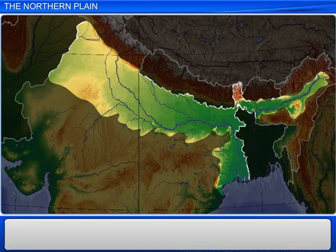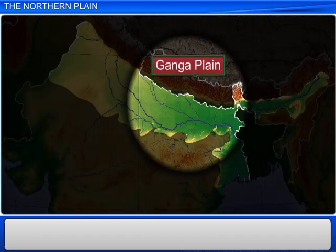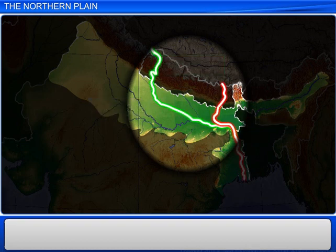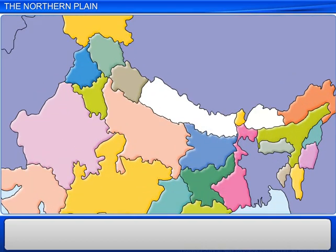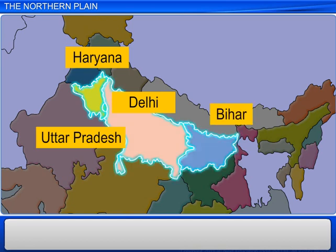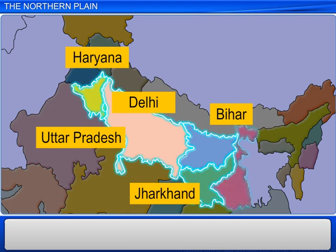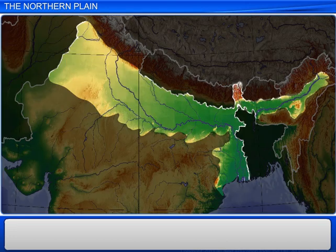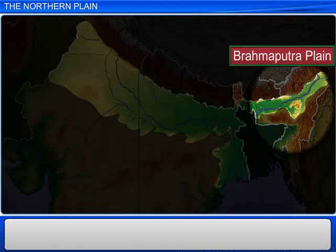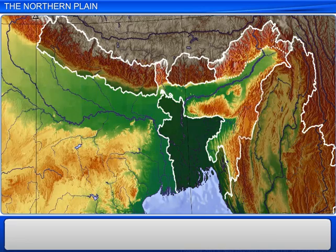The next part of the northern plain is the Ganga plain. This plain consists of the middle portion of the northern plain and lies between the Ghaggar and the Teesta rivers. The Ganga plain spreads over most states of North India — it covers Haryana, Delhi, Uttar Pradesh, Bihar, and parts of Jharkhand and West Bengal. Finally, the eastern portion of the northern plain is called the Brahmaputra plain, which lies in the state of Assam.